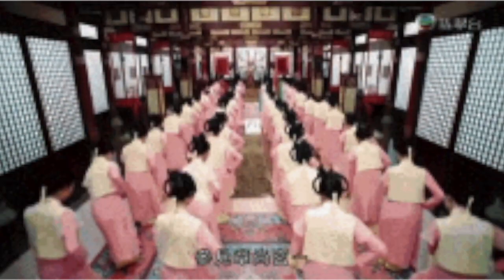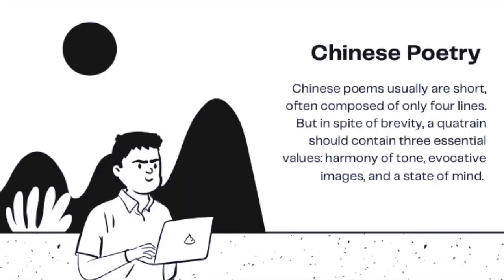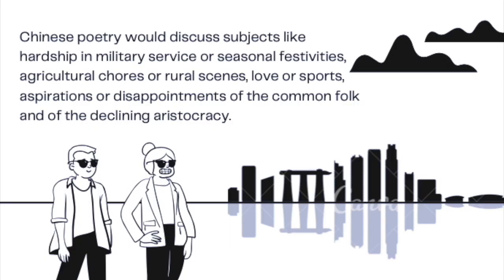Chinese people have a very rich culture mirrored in their literature. Chinese poems are usually short, often composed of only four lines. But in spite of brevity, a quatrain should contain three essential values: harmony of tone, evocative images, and a state of mind. Chinese poetry discusses subjects like hardship in military service or seasonal festivities, agricultural chores or rural scenes, love or sports, and aspirations or disappointments of the common folk and of the declining aristocracy.